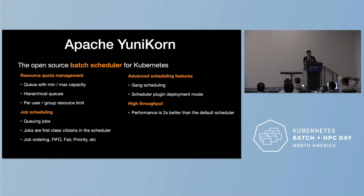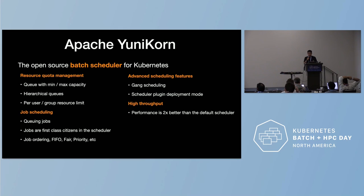Unicorn is an open-source batch scheduler for Kubernetes that provides key features needed by batch systems beyond the default scheduler. The first is resource quota management — namespace resource quotas are not really designed for batch systems. The second is job-level scheduling: we need to queue jobs, not just schedule pods, and consider each job's priority and other factors. Beyond that, there are advanced scheduling features such as gang scheduling, and a recently added scheduler plugin deploy mode for some use cases.